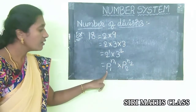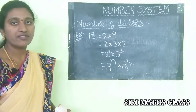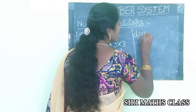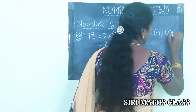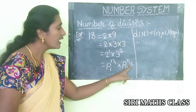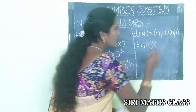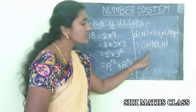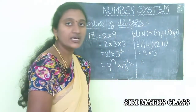The bases p1 and p2 are 2 and 3. Here n1 = 1 and n2 = 2. Now applying the formula: d(n) = (n1+1)(n2+1). Substituting: n1 = 1 so (1+1) = 2, and n2 = 2 so (2+1) = 3. Therefore 2 × 3 = 6.